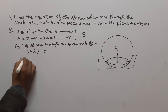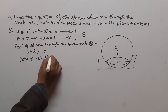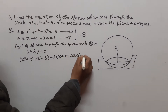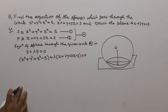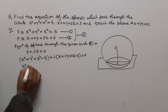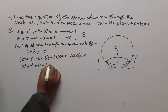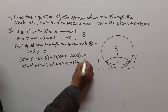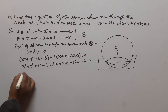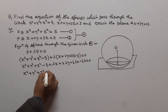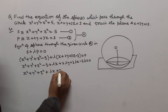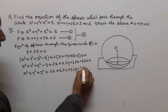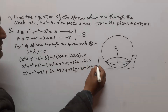So we write: x² + y² + z² − 5 + λ(x + 2y + 3z − 3) = 0. Expanding, this gives x² + y² + z² + λx + 2λy + 3λz − 3λ − 5 = 0. Suppose this is equation B.